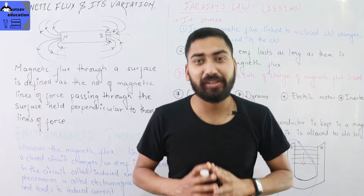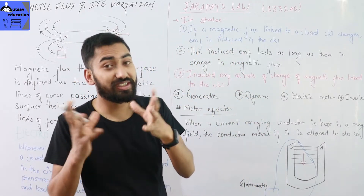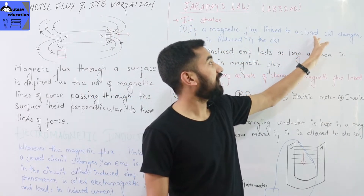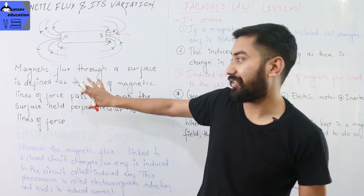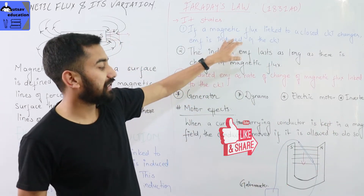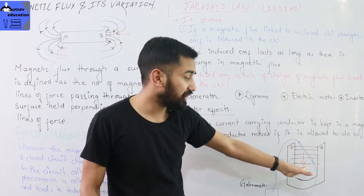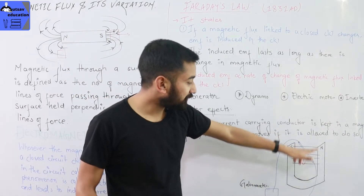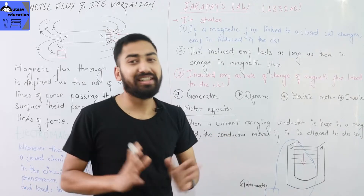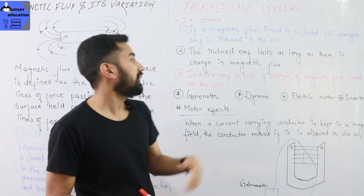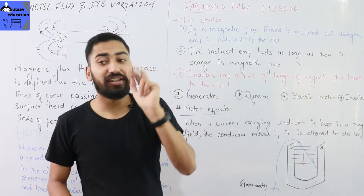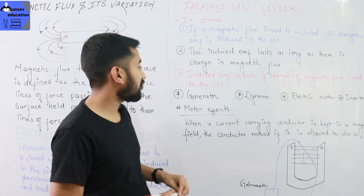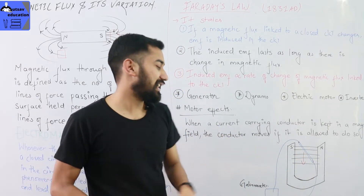Faraday's law of electromagnetic induction states: first, if the magnetic flux linked to a closed circuit changes, an EMF is induced. The induced EMF lasts as long as there is a change in magnetic flux. If you stop moving the conductor, the galvanometer will show no deflection. The second point is that the induced current and EMF are directly proportional to the rate of change of magnetic flux.